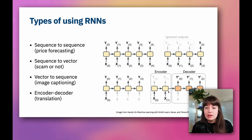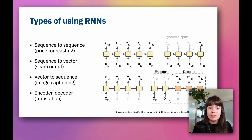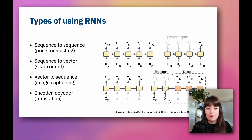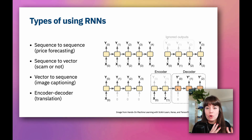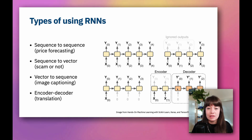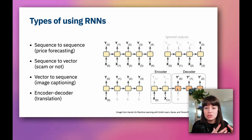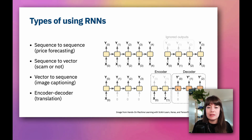Lastly, we have the encoder-decoder sort of architecture. In these kinds of RNN architectures, at first you are only giving your network inputs for a number of time steps, and then you get outputs. In the second part, you only get outputs — you do not give any inputs. These kinds of architectures are good for translation, because to translate a sentence your network needs to see the whole sentence first, since the meaning of some words might change based on context. So you first give it the whole sentence and then you get the translation word by word on the decoder part.